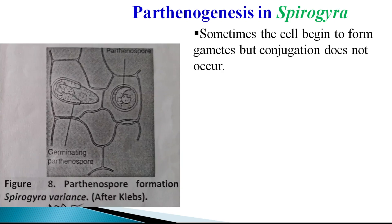If there are two filaments producing their gametes, gametic fusion should occur by means of a conjugation tube. For formation of a zygote, there should be a dissolution of the wall between them. If this wall does not get dissolved, or the male gamete is not brought in contact with the female gametangium, such conditions may cause the conversion of that unfused gamete into a spore-like structure.